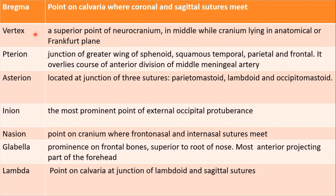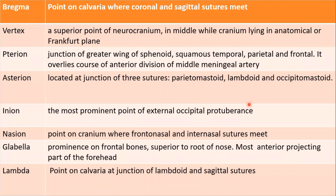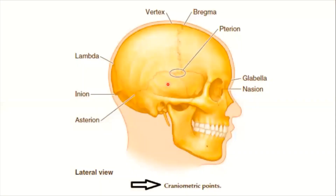In this summary table for norma verticalis: bregma is the point where the coronal and sagittal sutures meet. The vertex is the superior-most point — the highest point in the midline of the skull (calvaria) in the anatomical position of the skull, which is the Frankfort plane (orbitomeatal plane). Lambda is the meeting point of the sagittal and lambdoid sutures, as seen both from above and from the lateral view.